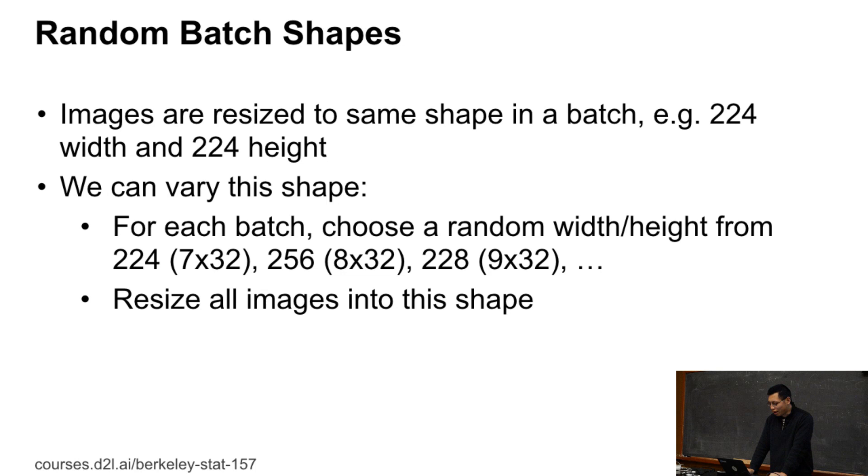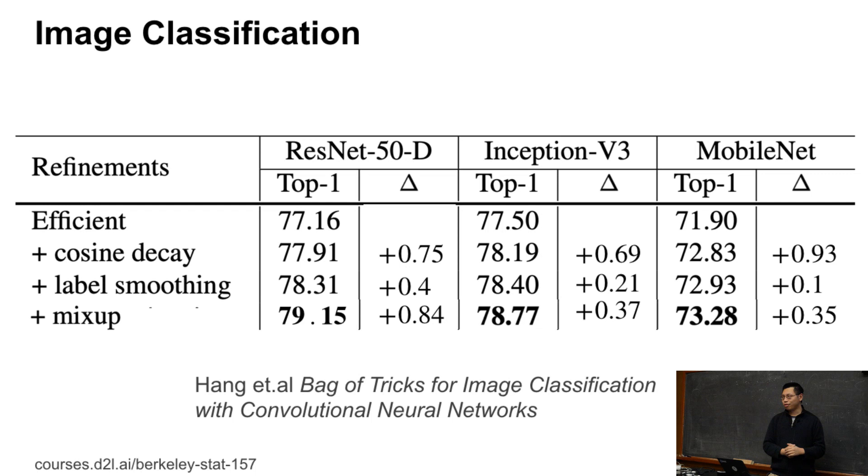So here we show some small results, like how the things matter. So firstly, it's image classification, and we choose the ResNet, Inception V3 and MobileNet. Efficient is the baseline. We always improve the state-of-the-art result on the paper. Then, adding cosine decay, like this one, top one accuracy on ImageNet. Adding cosine decay gives you for ResNet 0.75% accuracy. Adding another label smoothing, 0.04. And the mix-up actually gives you a lot of things here, 0.84 for ResNet. In total, so that's why we can improve the baseline from 77% to 79.